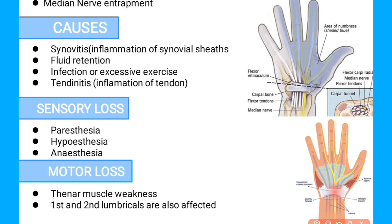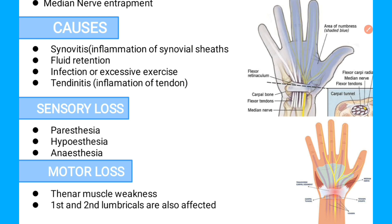As you can see in the image, we have the Median Nerve in the Carpal Tunnel, the Flexor Retinaculum — also called the Transverse Carpal Ligament. Here we also have the tendons. The compression of the Median Nerve can cause these kinds of losses.